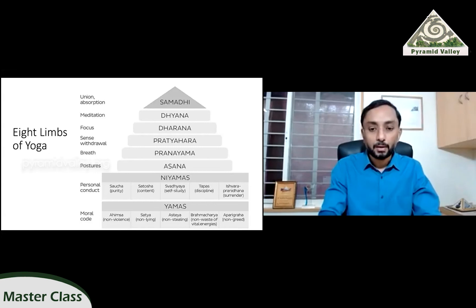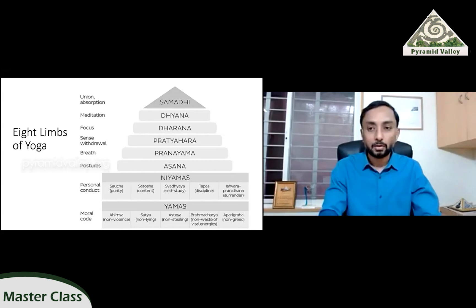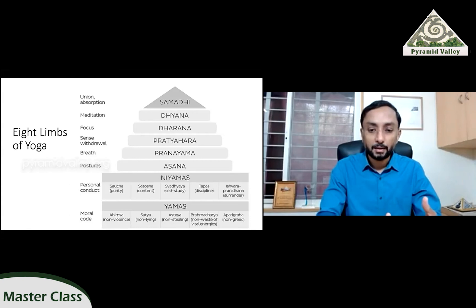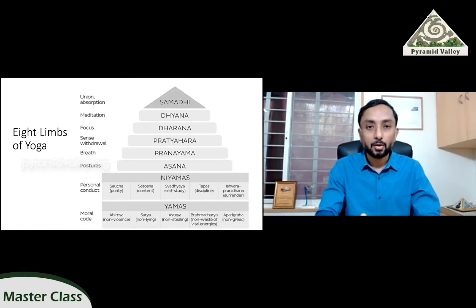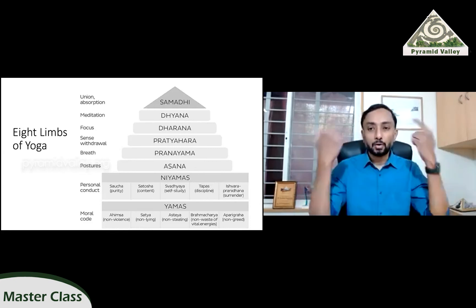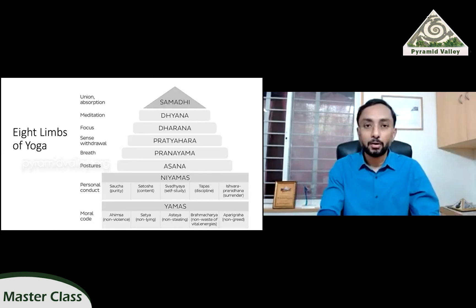Starting from the bottom, Yamas are the restraints we have to apply in our life — like moral science classes in school. Being nonviolent, satya or speaking truth, non-stealing or asteya, brahmacharya which is moderation and non-waste of vital energies, and aparigraha which is non-greed. These are the restraints of not doing something that will cause those afflictions and fluctuations of the mind waves.